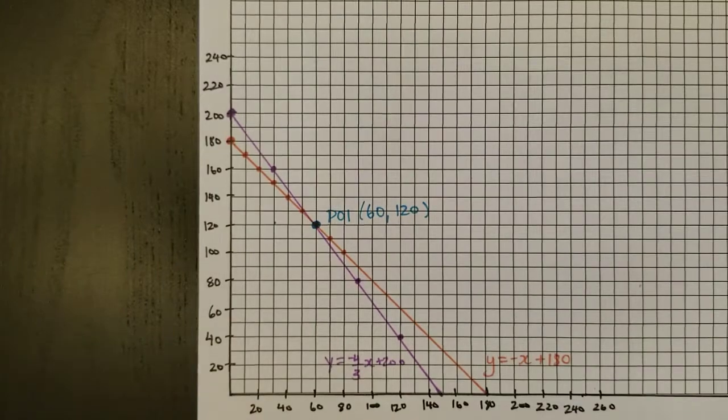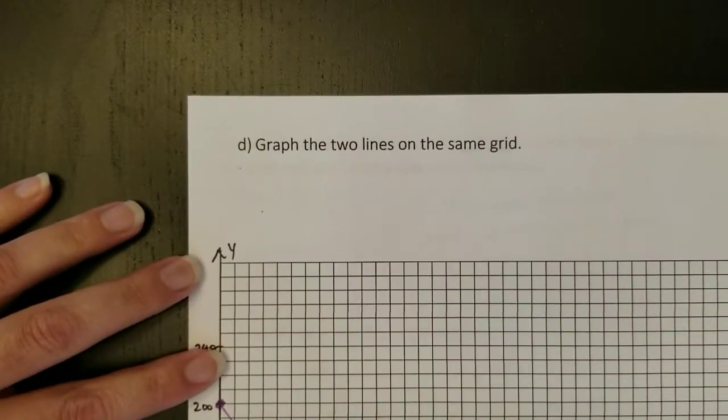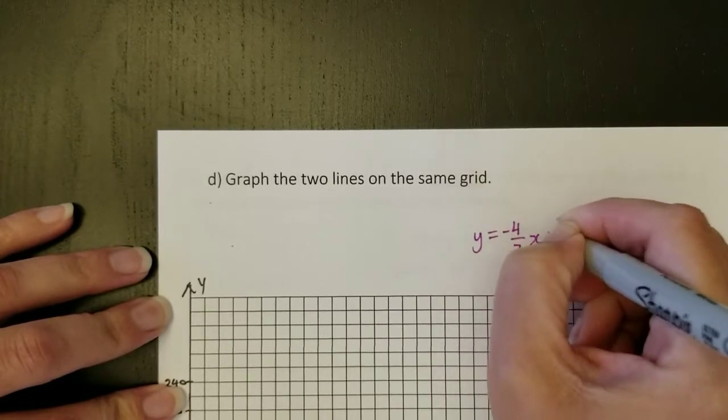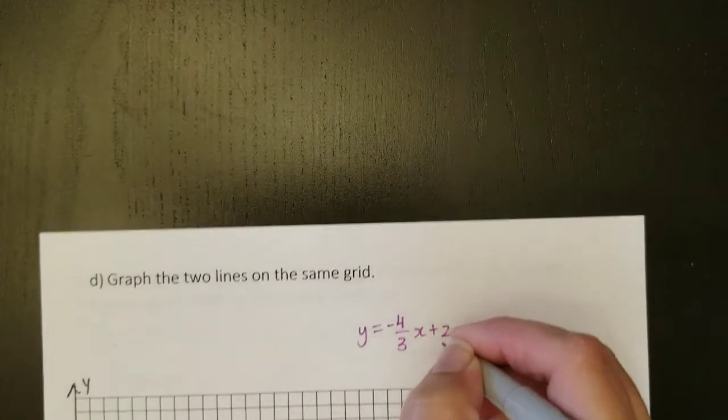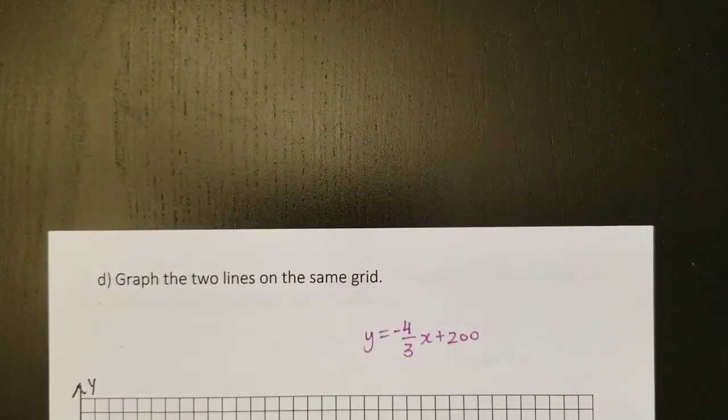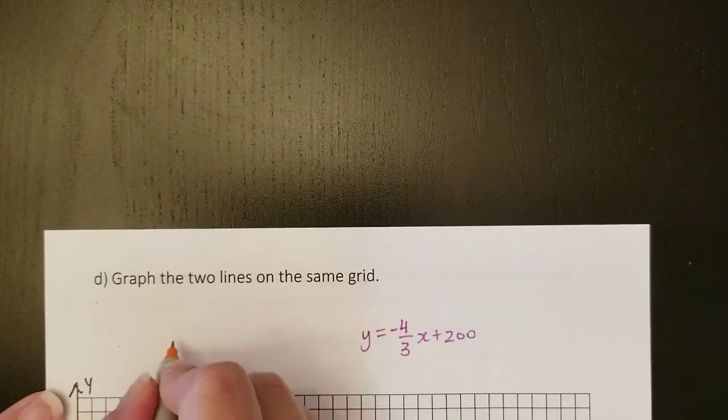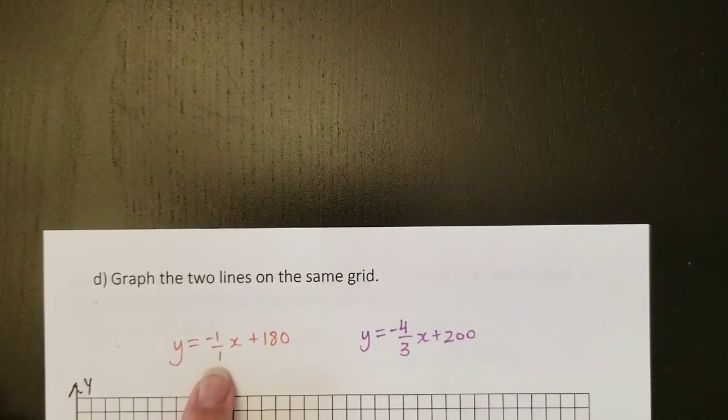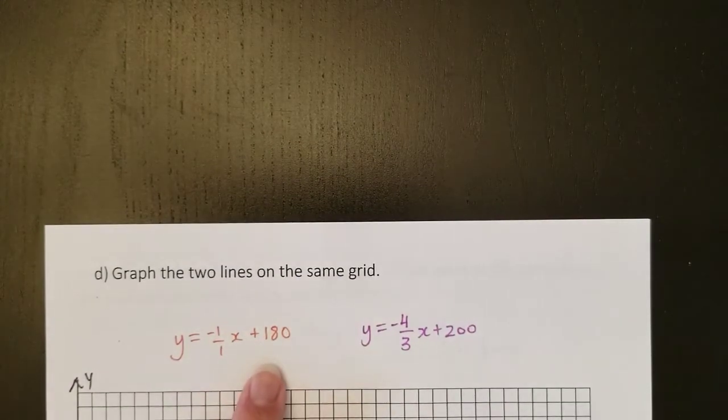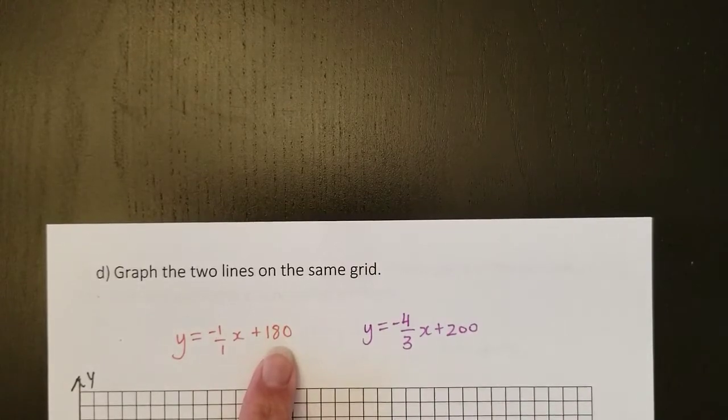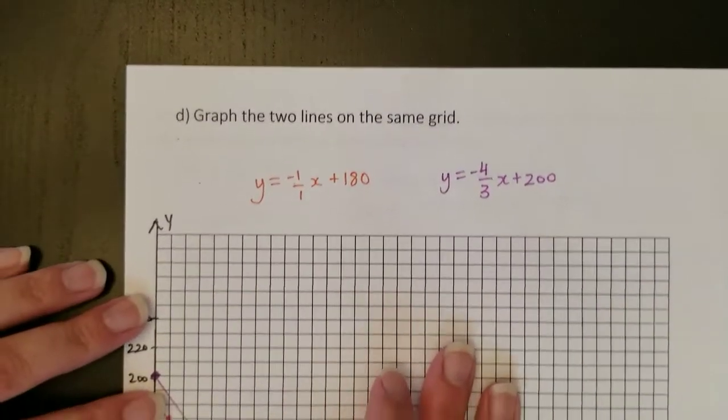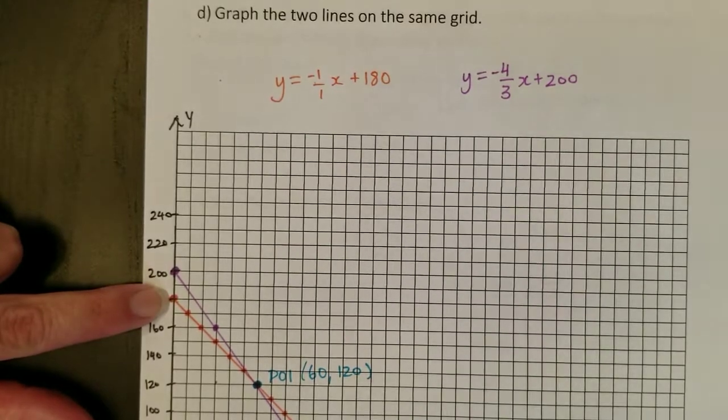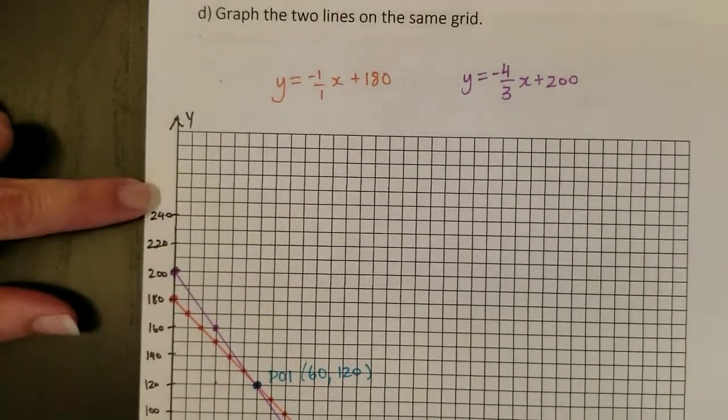So my two lines, I'm just going to rewrite them up at the top here. So the second line was Y equals negative 4 over 3X plus 200. So I had a slope of negative 4 over 3 and a Y-intercept of 200. The other one was Y equals negative 1 over 1, you don't really need that there, but I think it makes it easier to see the slope, plus 180. So if I graph the orange line first, remember that you're starting at the Y-intercept and then you're using the slope for rise and run.